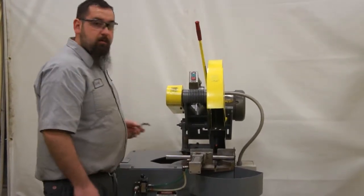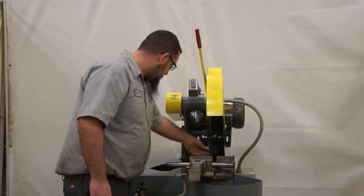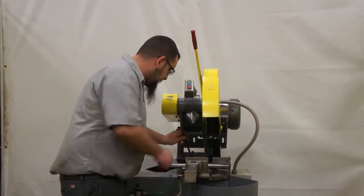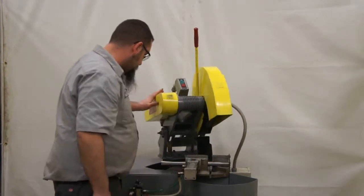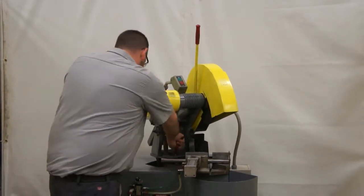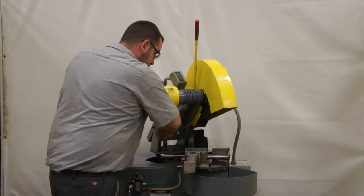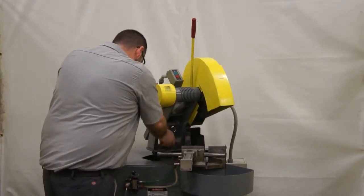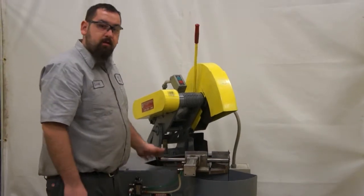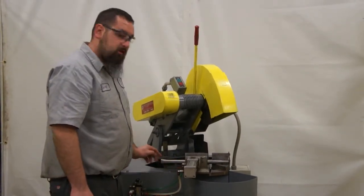You can also make mitered cuts with this. You've got a 3 inch Allen key. Loosen up the binder. Come over here. We're going to do a 30 degree cut, 45 degree cut, 90 degree cut, however you want to do. Just snug the binder. You don't need to go crazy on these. All you need to do is just snug them.